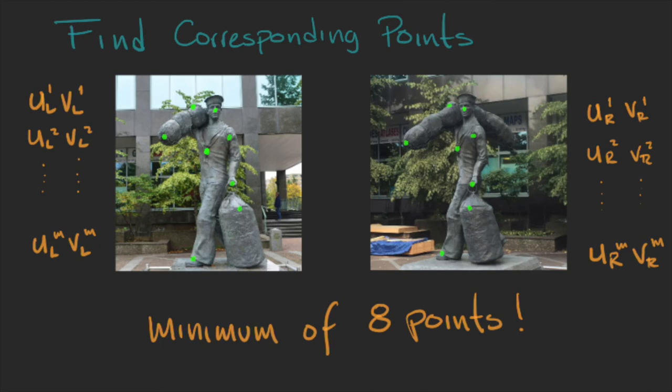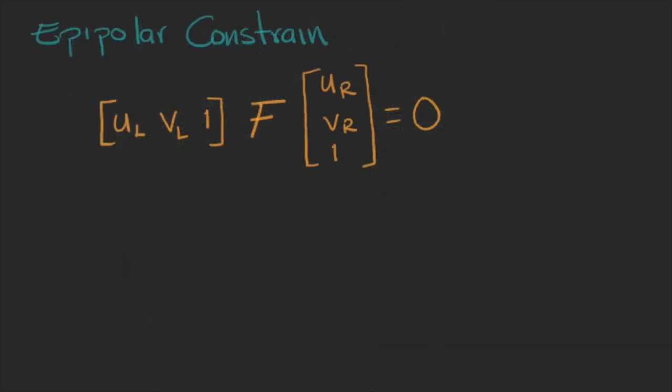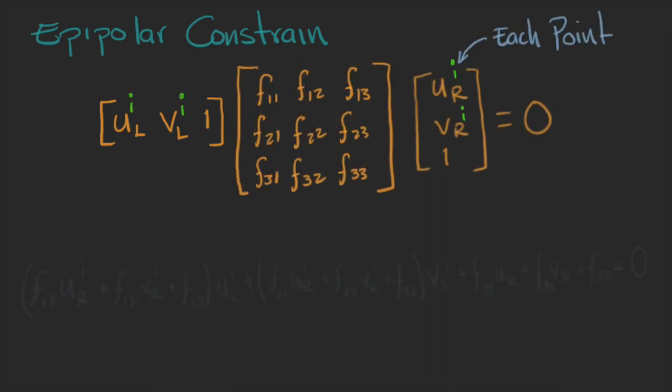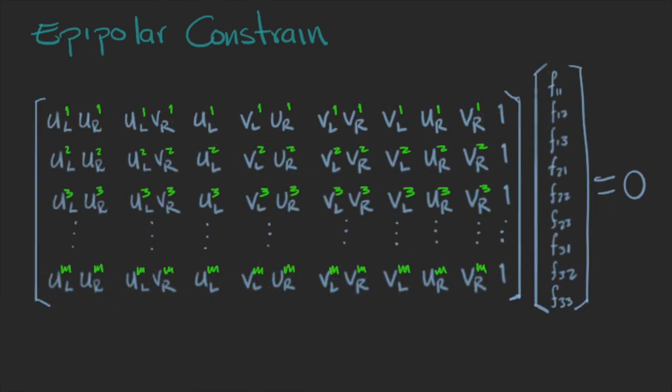So, once we have our UV points, we can plug them into the equation of the epipolar constraint to find the fundamental matrix. We can expand this into linear equations like this one. But the best way to see it is in the matrix form. So, we have a linear system like this, in which the first matrix is formed by all the points we collected. Then, the fundamental matrix is in a vector shape. And all of this is equal to zero.